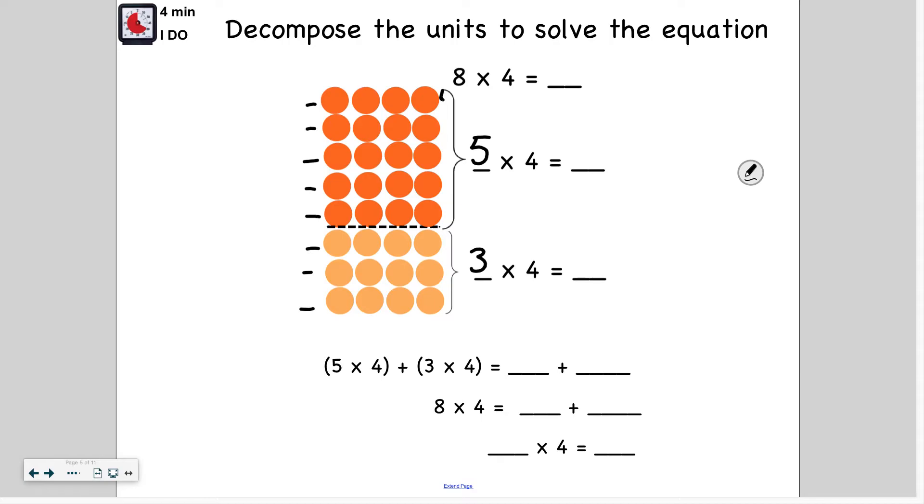I'm going to skip count by fours just to double check, make sure that I'm right. I think it's 20, but I want to be sure. Eight, twelve, sixteen, and twenty. So I was right. So five times four equals 20. And I already know that three times four is 12 just because I've heard that fact so many times on Reflex.